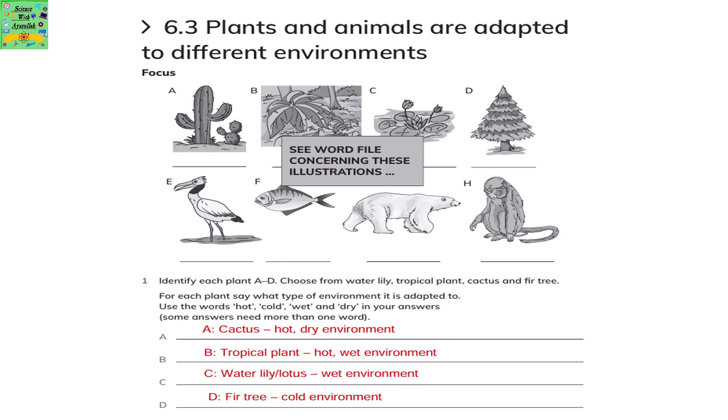Cactus is adapted to a hot and dry environment, like they are found mostly in deserts. Tropical plants are also adapted to a hot and wet environment. Water lily or lotus is adapted to a wet environment. Fir tree is adapted to a cold environment.